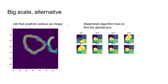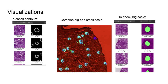I also tried an alternative net for the big scale that predicts edges as an image, and then uses the watershed algorithm. I also made a lot of visualization for the contour image, for combining big and small scale, and for the big scale alone.